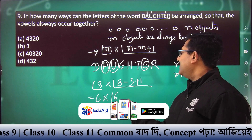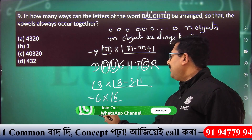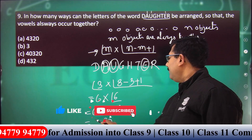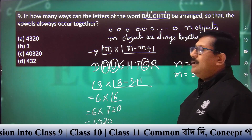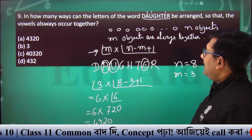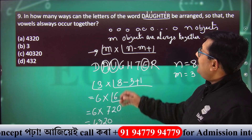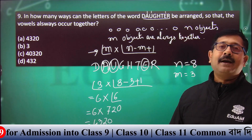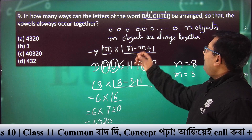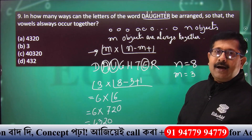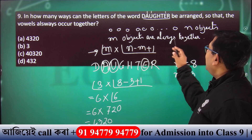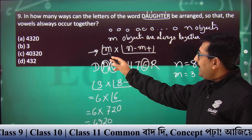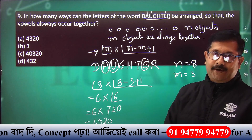Factorial of 6 equals 720. So factorial of 3 multiplied by factorial of 6 equals 6 into 720 equals 4320. So 4320 is the number of arrangements.